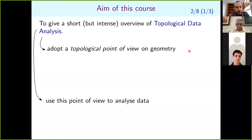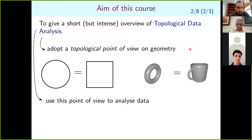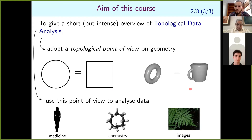The aim of this course is twofold. First, I would like to introduce the topological point of view that we adopt on geometry. For topologists, everything is deformable — you can twist, you can bend everything. At the end of this course, you will know that a circle is the same thing as a square, and a donut is the same thing as a nugget. Thanks to this point of view, we will develop new methods to analyze data. Topological data analysis is a very young theory, about 20 years old, but it has been used in many contexts such as medicine, chemistry, and image analysis.